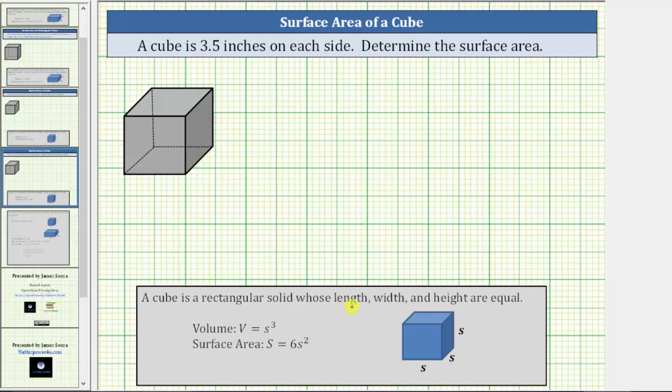A cube is a rectangular solid whose length, width, and height are equal, and therefore each of these six faces is a square as pictured here.